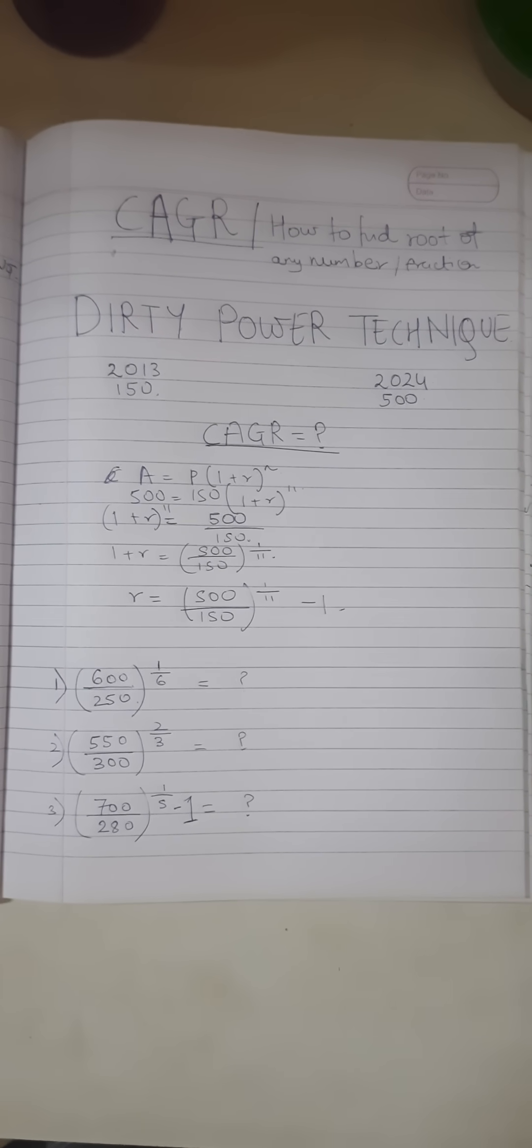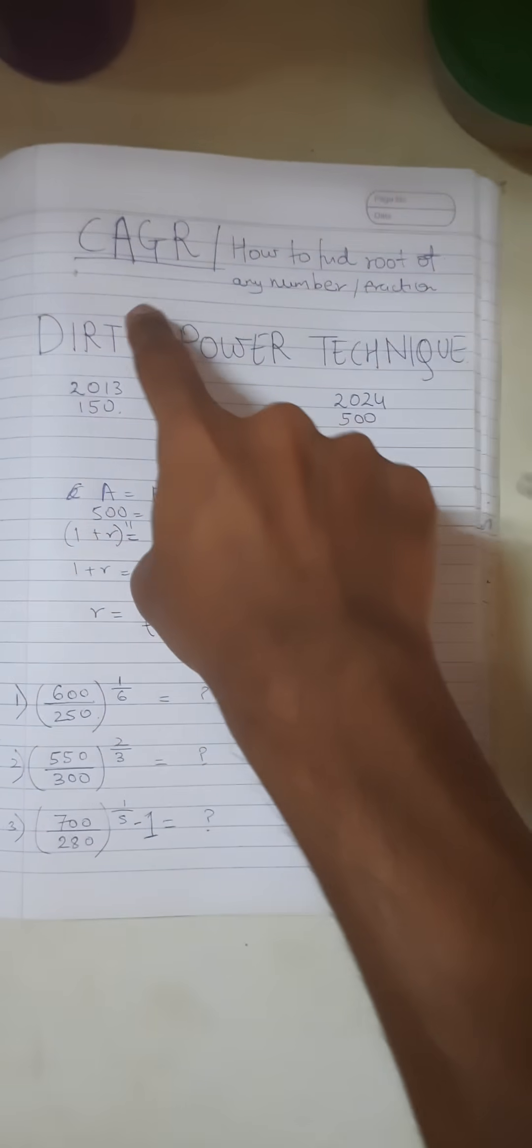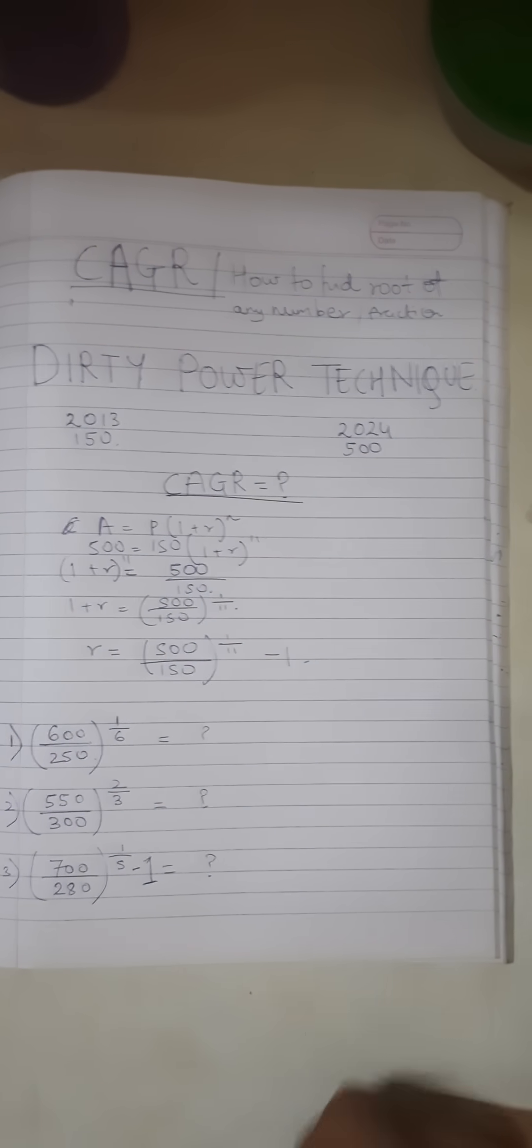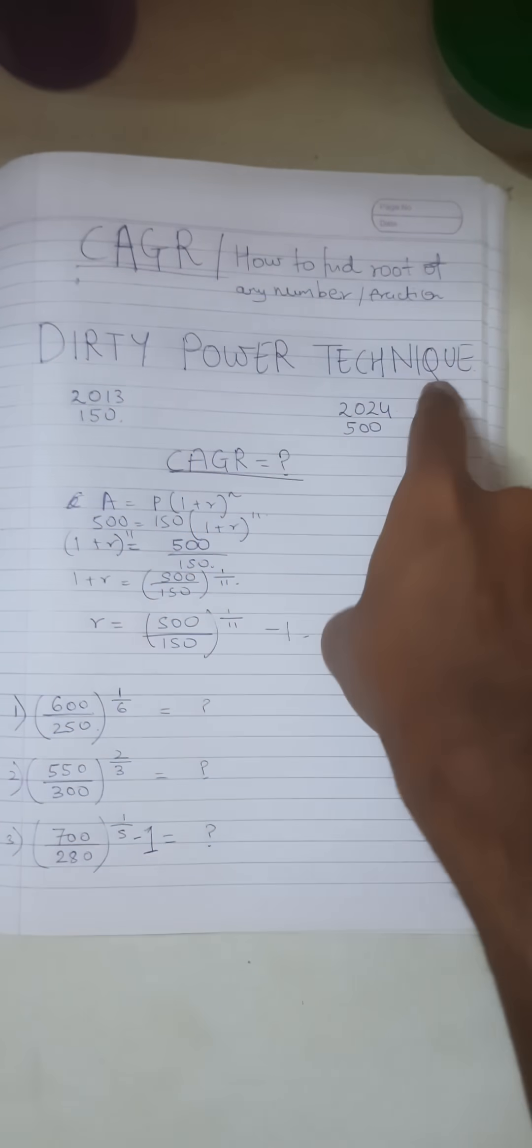Hello everyone, welcome back to part 2 of the series. Today we'll see how to calculate CAGR, that is compounded annual growth rate, or how to find the root of any number. The technique remains the same, that is the dirty power technique, which I'll explain shortly.